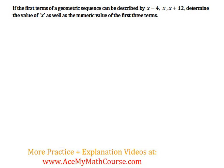Here we have another intermediate problem involving geometric sequences. The first terms of a geometric sequence can be described by x minus 4, x, and x plus 12. Given this, determine the value of x as well as the numeric value of the first three terms.